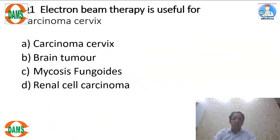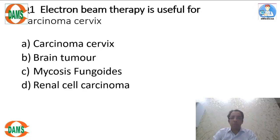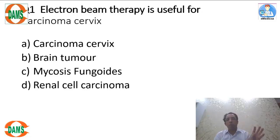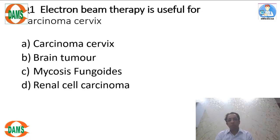The first question is: electron beam therapy is useful for which condition — ca cervix, brain tumor, mycosis fungoides, or RCC? Electrons are produced by a linear accelerator. These electrons do not have much penetrating power, so electron beam therapy can only be used if the tumor is superficially located. That is the key to answering this question.